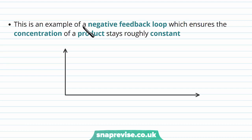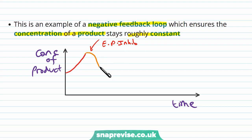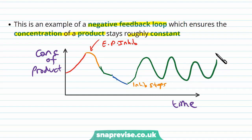This is a clear example of a negative feedback loop, meaning the concentration of the end product stays roughly constant. Over time, the concentration initially rises, then end product inhibition brings it back down, and the concentration settles at a normal level. If it ever drops too low due to inhibition, the inhibition stops and concentration rises again. So over time it oscillates between being too high and too low but overall remains at a nice constant level.